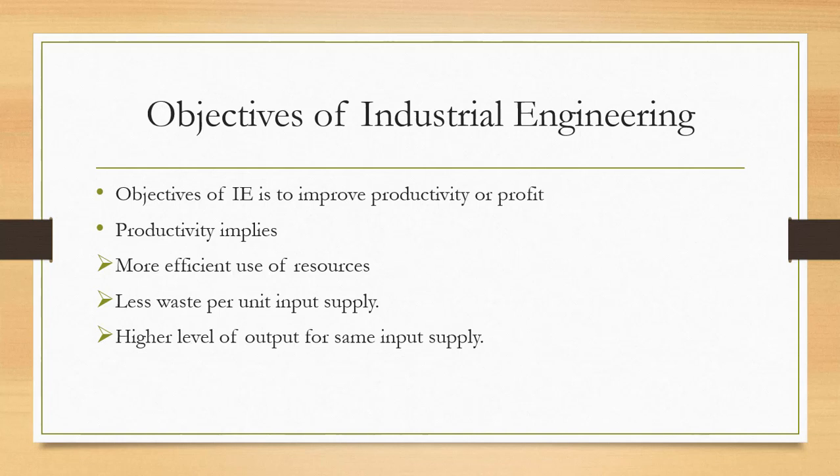The objective of studying this subject is that industrial engineering is studied to improve the productivity or profit of the industry. The only objective of industrial engineering is to improve the productivity or profit of the industry. Productivity implies more efficient use of resources — resources like man, material, machine, money, and energy — that we utilize to produce any product or service.